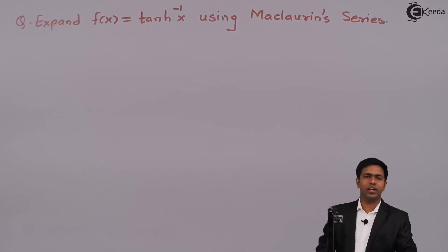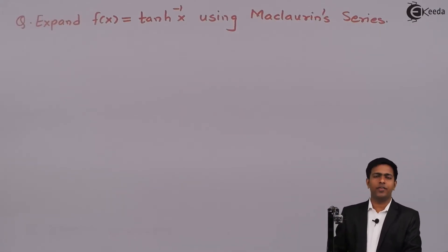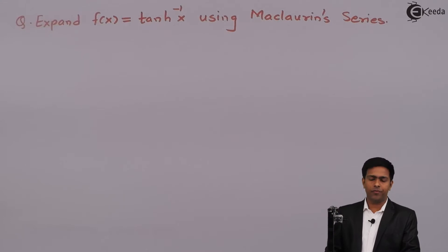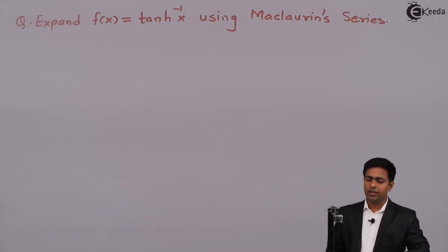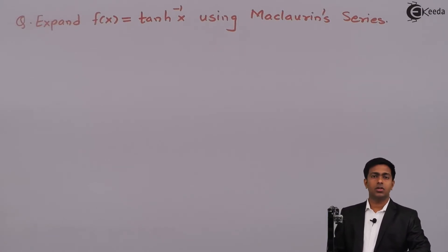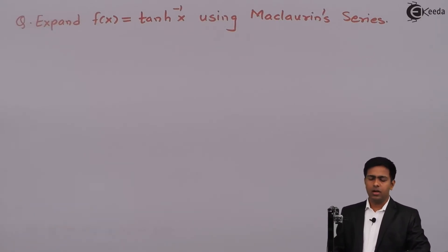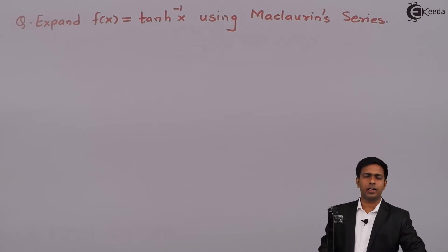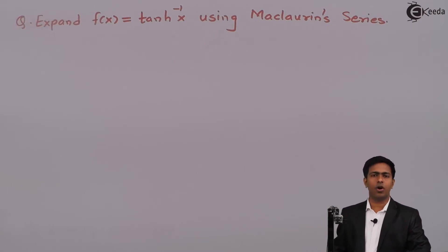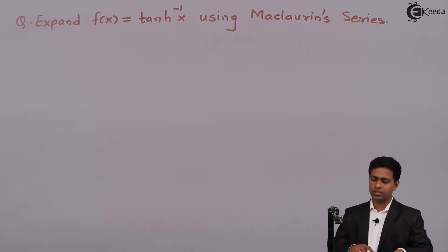Hello everyone. In this problem we have to expand hyperbolic tan inverse x by using the Maclaurin series. So we have to find out the expansion using Maclaurin series. To get the expansion we have to first find out what the Maclaurin series is. I'll write down the formula and then find the terms needed to get the expansion of hyperbolic tan inverse x.